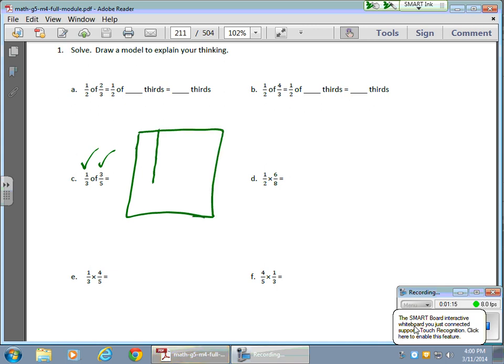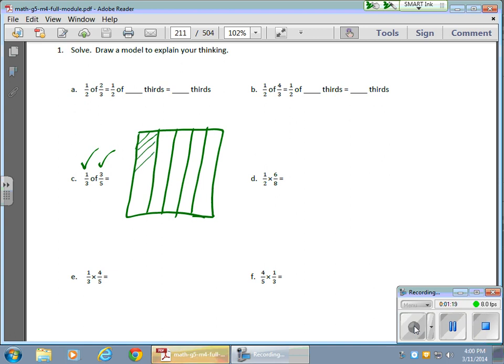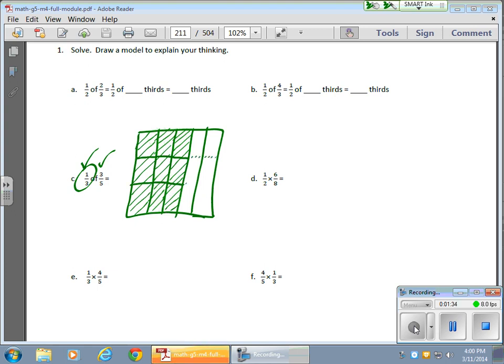Here's my rectangle. 1, 2, 3, 4, 5. Shade in 3 fifths. Here comes 2 fifths and 3 fifths. And I want to take one-third of that. So what I need to do now is take this area and split it into thirds. What I'm also going to do is complete my segments here to show that all the boxes are the same size because that will help me come up with a fraction.